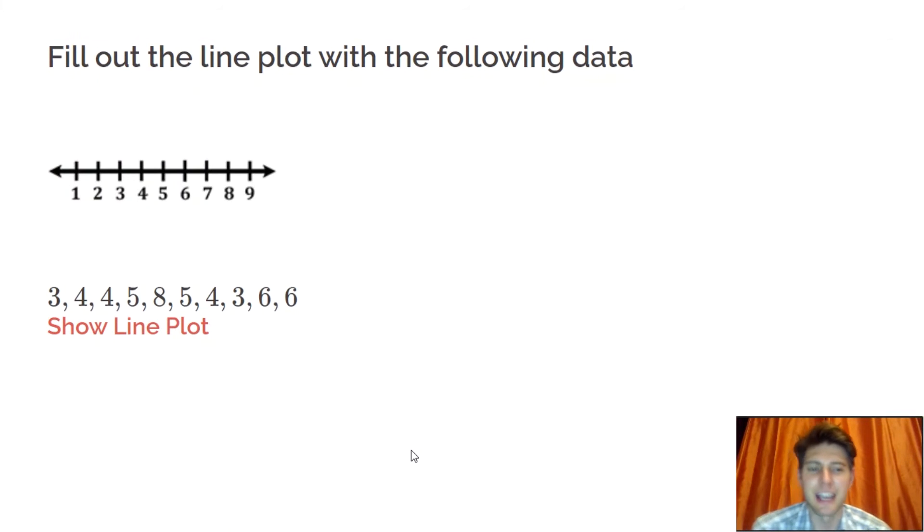Fill out the line plot with the following data. So all you do for these is just put dots for each of the numbers. So for a 3, we're going to put a dot right here at the 3.